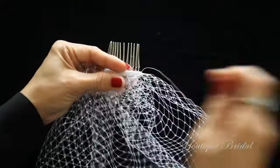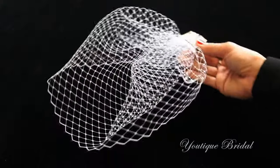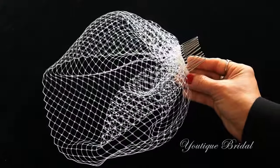Now for the final step, you're just going to sew and attach it to the hair comb. And you are complete with a birdcage veil. So here are the two ways you can style the birdcage veil.